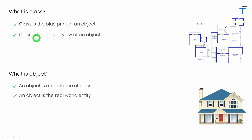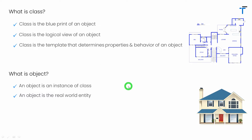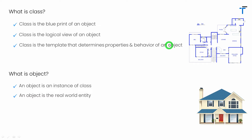Thus I can say a class is the logical view of an object. We can also say a class is actually a template that determines the properties and behavior of an object. For example, using a map we can determine how many rooms, doors, and windows are in the house, and what is the type of room structure. The class is a template that contains properties — that is the data — and behavior, meaning the methods inside the class determine the behavior of an object.